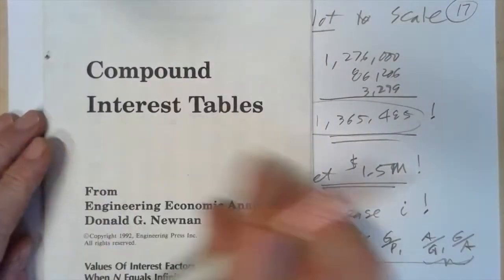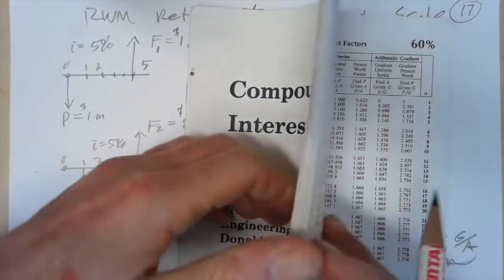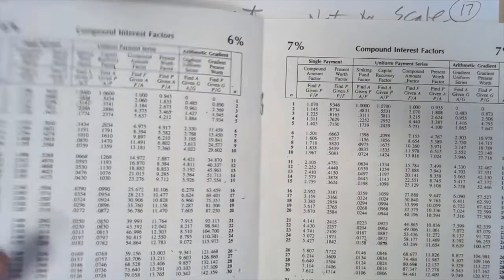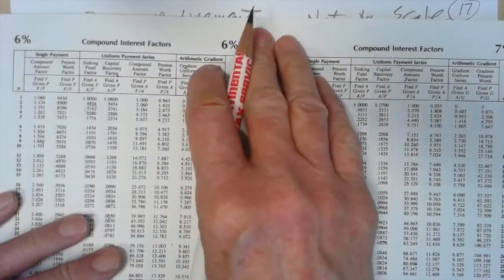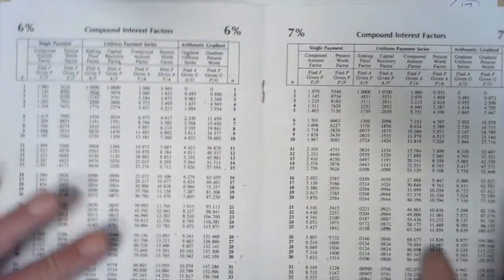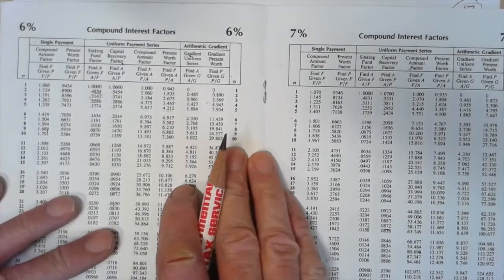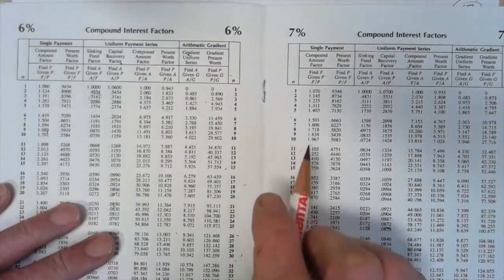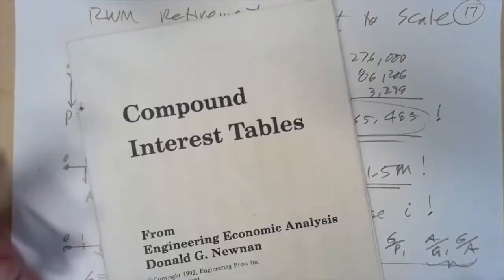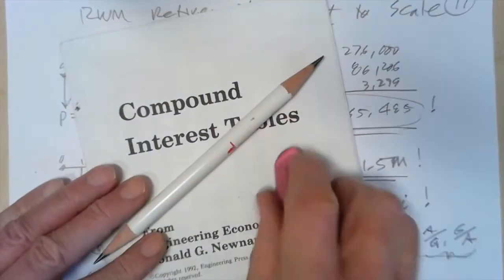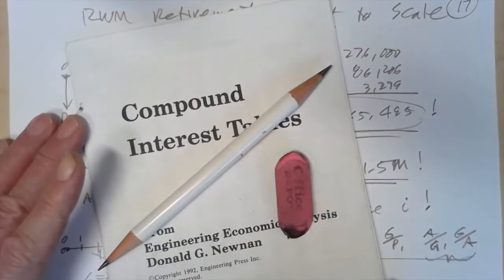You need a set of compound interest tables, which you can get from the internet. These numbers are not going to change, I will guarantee that. Remember, this is end of period convention. You also need a pencil, maybe eraser, some paper.